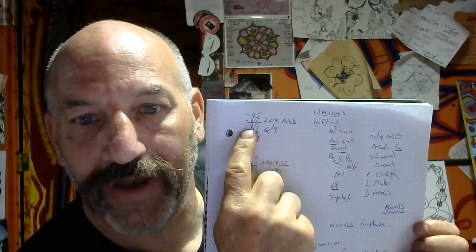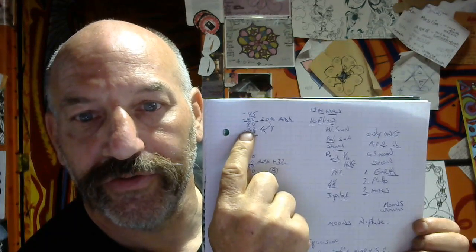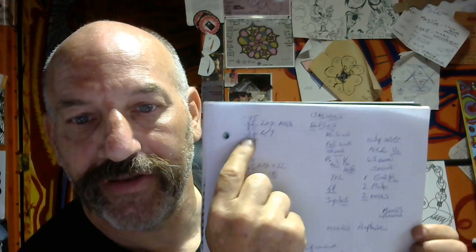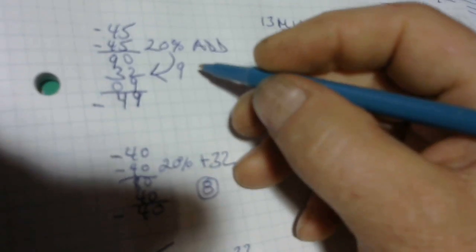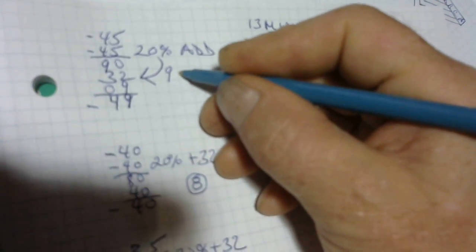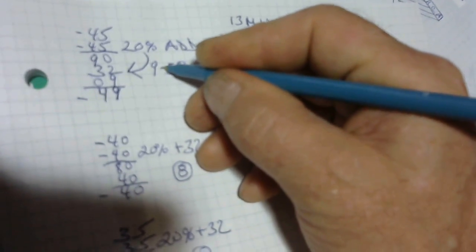So 45 and 45 is 90. Take away 32 equals to 58. Take away 20 percent of this. 58 becomes 49. I'm going to show you this. 58 becomes 49, so this would be 9 minus 58.